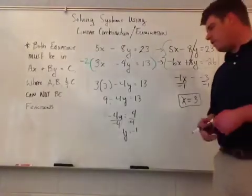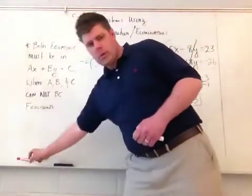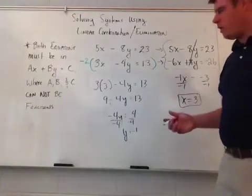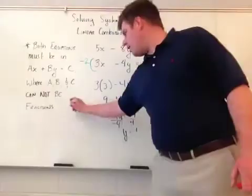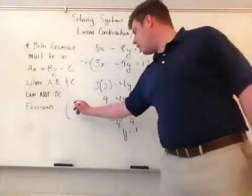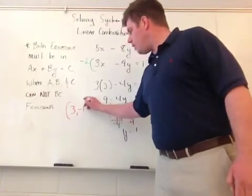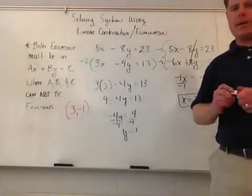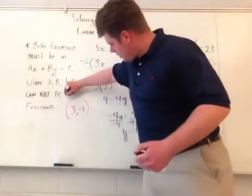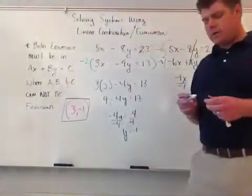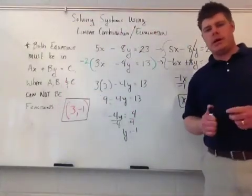What I have here for a final answer, because this is a system and what we're trying to find is the coordinate where they intersect, is that my final answer is going to be 3, negative 1. That's the coordinate pair where my two intersect. So this is my answer here. And that's how we do these problems by elimination.